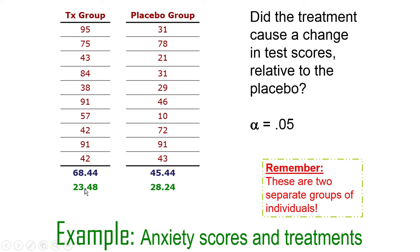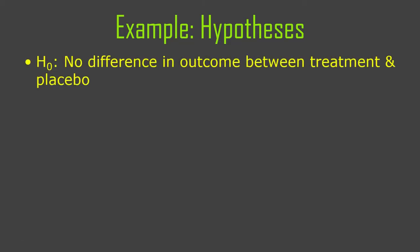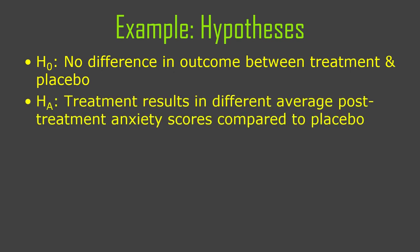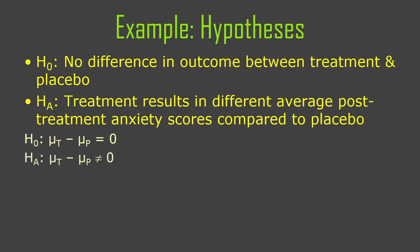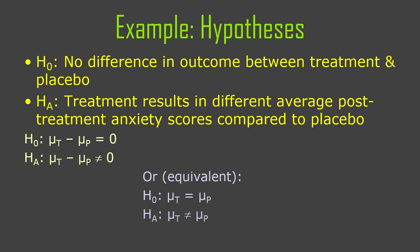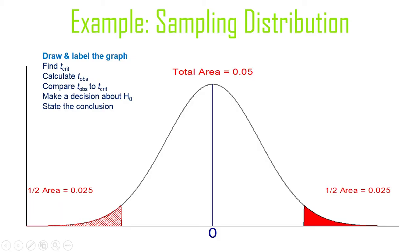We've got a mean of 68.44 on the anxiety score scale for the treatment group, and a lower mean for the placebo group. Here are the standard deviations of each. The null hypothesis is there's no difference in outcome — no difference in anxiety scores. Alternative hypothesis, two-tailed: the treatment results in a different average post-treatment anxiety score than the placebo. In notation: mu1 minus mu2 equals zero for the null, not equal to zero for the alternative.